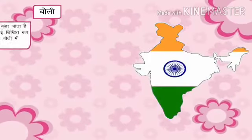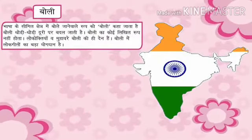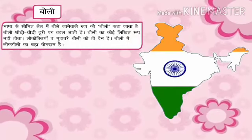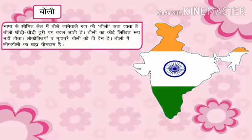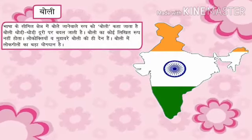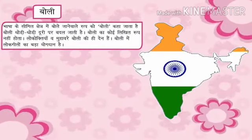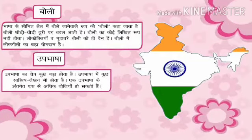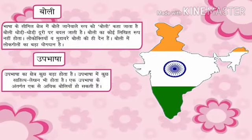भाषा, उपभाषा और बोली: एक बोली — भाषा के सीमित क्षेत्र में बोले जाने वाले रूप को बोली कहा जाता है। बोली थोड़ी-थोड़ी दूरी पर बदल जाती है। बोली का कोई लिखित रूप नहीं होता। लोकोक्तियाँ व मुहावरे बोली की ही देन हैं। बोली में लोकगीतों का बड़ा योगदान है। दो, उपभाषा — Up-bhasha ka kshetra kuch bada hota hai. Up-bhasha mein kuch sahitya lekhan bhi hota hai. Ek up-bhasha ki antarrgat ek se adhik boliyan ho sakti hain.